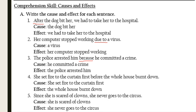Sentence four: 'She set fire to the curtain first, before the whole house burned down.' What happened first? She set fire to the curtain — this is the cause. Then what happened? The whole house burned down — this is the effect.